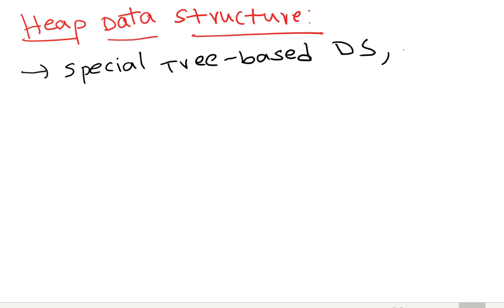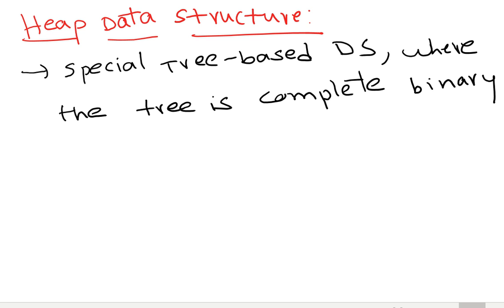The heap is where the tree is a complete binary tree. I said in previous classes what is a complete binary tree. It should be a complete binary tree. In simple terms, what is a heap data structure? It is a complete binary tree.